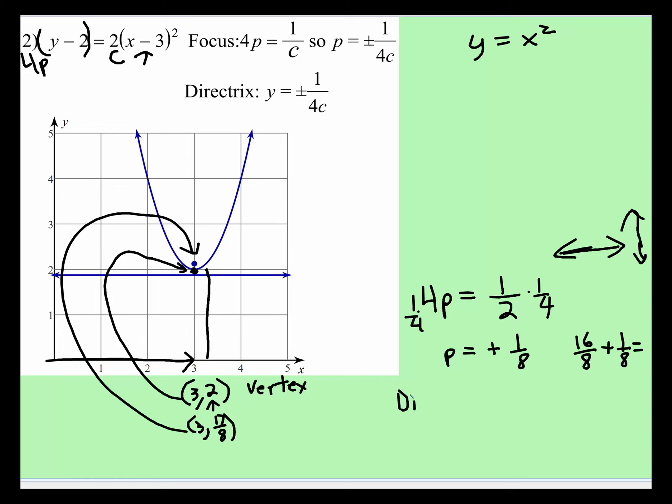Now to find the directrix, remember, the directrix is just this horizontal line, so we know that it's going to be an equation y is equal to a value. Notice, the directrix is the same distance. It's 1/8 in the negative direction. So if the vertex is at 16/8, we now subtract 1/8, and the equation of the directrix is y equals 15/8.